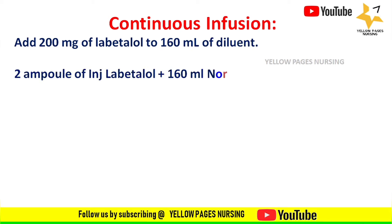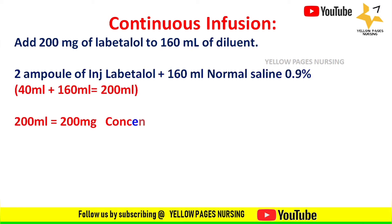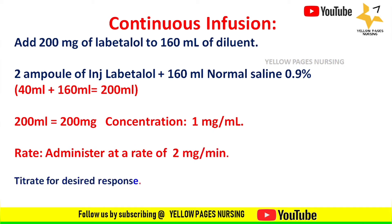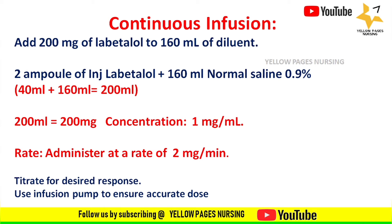Add 200 milligram of labetalol to 160 ml of diluent — 0.9% saline — that is 40 ml plus 160 ml equals 200 ml. Hence 200 ml equals 200 mg, and the concentration in the diluted solution will be 1 milligram per ml.